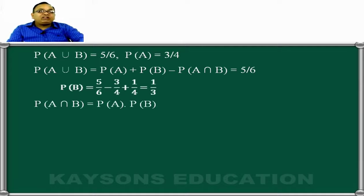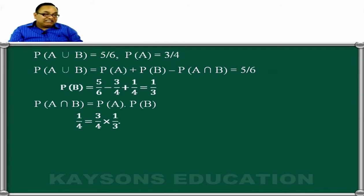Now, probability of A intersection B is nothing but the probability of A into probability of B. Thus, 1 upon 4 is equal to 3 upon 4 into 1 upon 3, which becomes 1 upon 4. Then the correct answer would be option choice C.